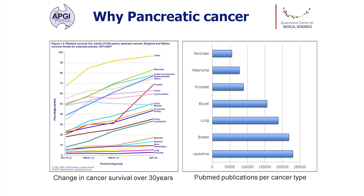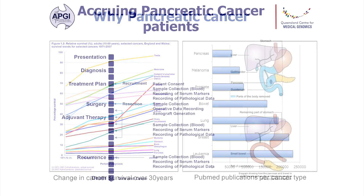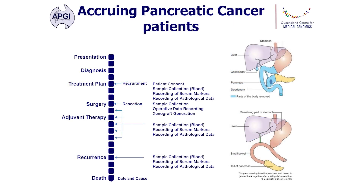When we look further into pancreatic cancer, over the last 30 years just about all cancers have had a marked increase in survivability. Unfortunately, pancreatic cancer — sitting as the dark blue line right at the bottom — hasn't changed much at all in the last 30 years. Coupled with this, the amount of research going into pancreatic cancer, listed here with PubMed publications, is really quite small.